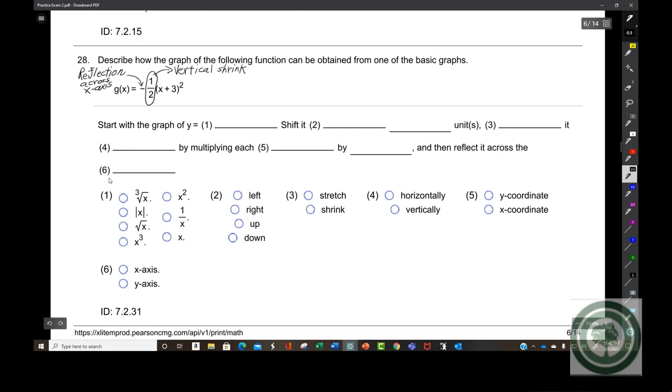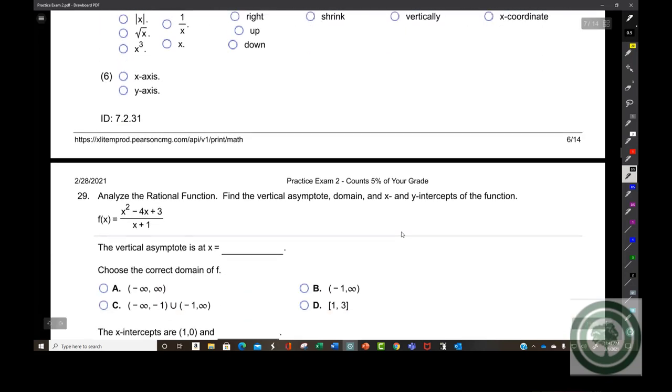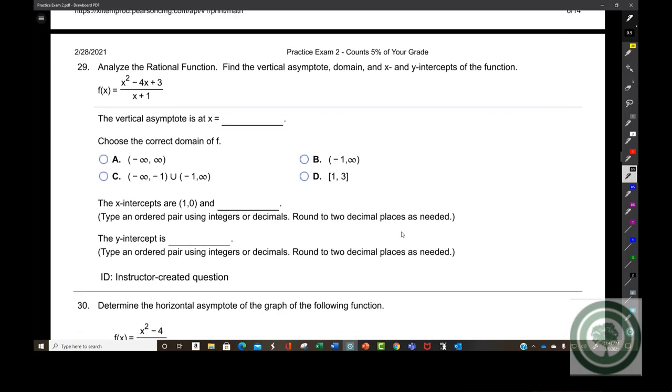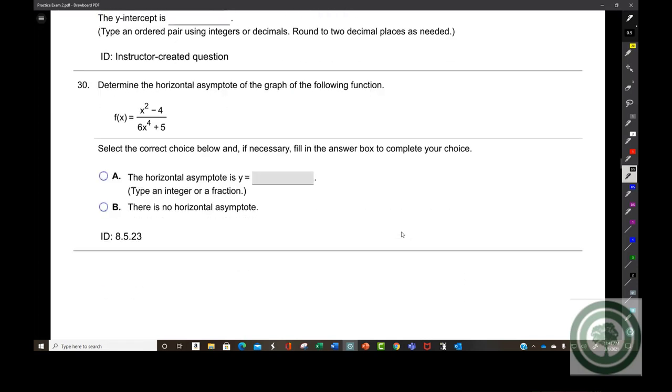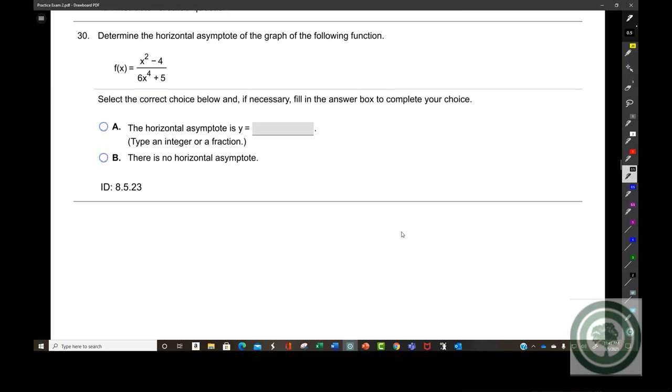This is a wonderful opportunity for you to review all that stuff. Now, do you feel comfortable with analyzing rational functions? This question: what's the horizontal asymptote? The highest power of the bottom is bigger than the highest power of the top. When that happens, your horizontal asymptote is automatically the line y equals 0, which is the x-axis.